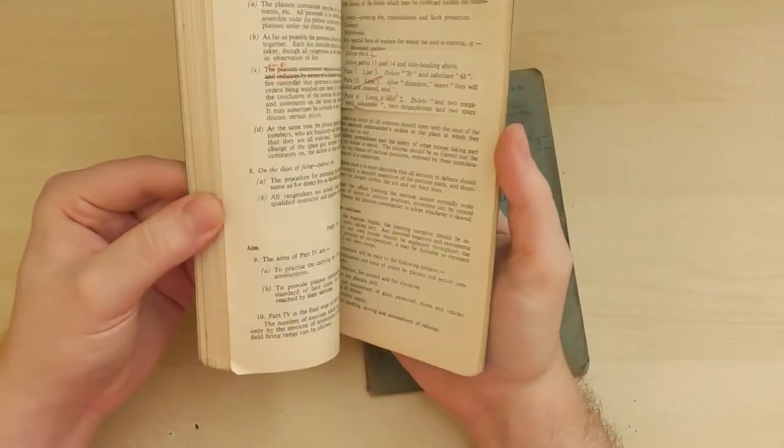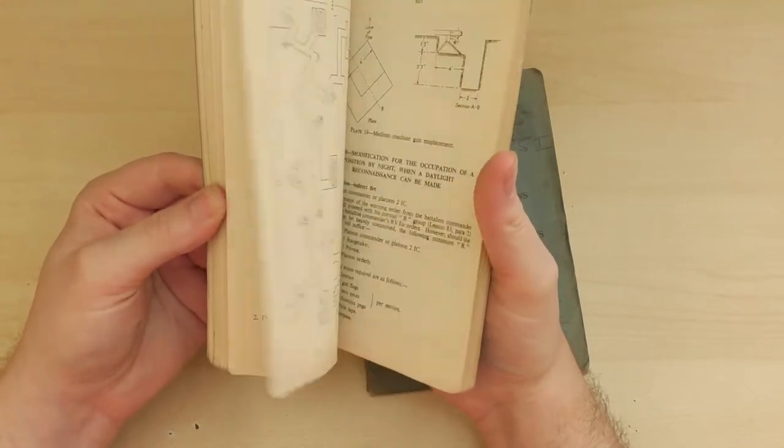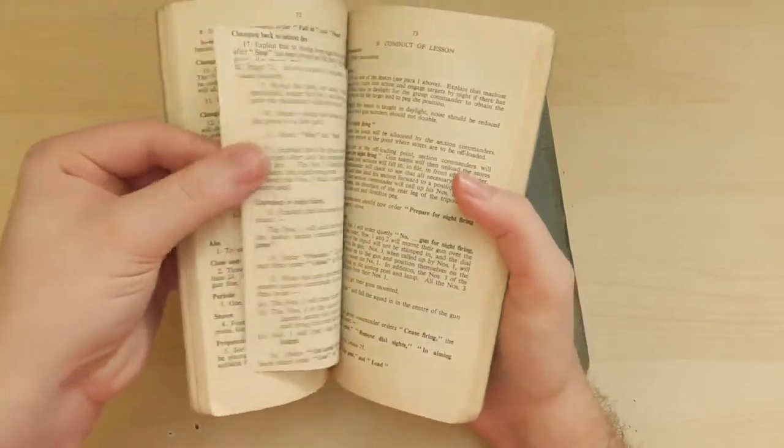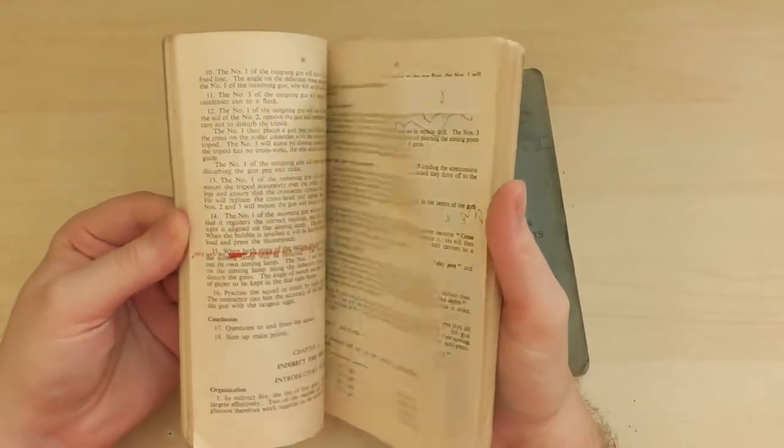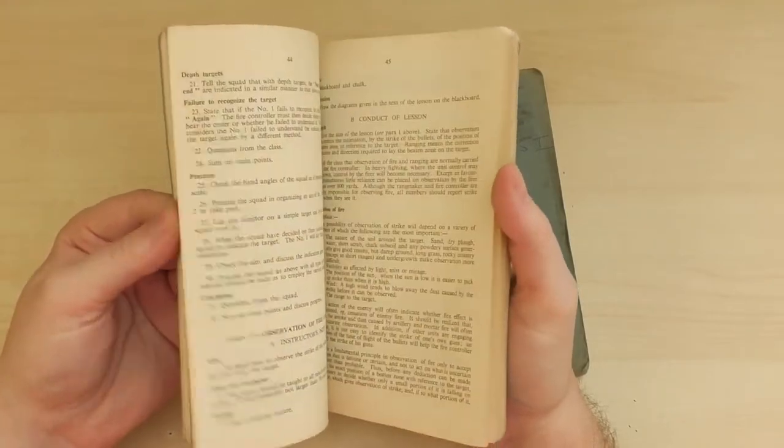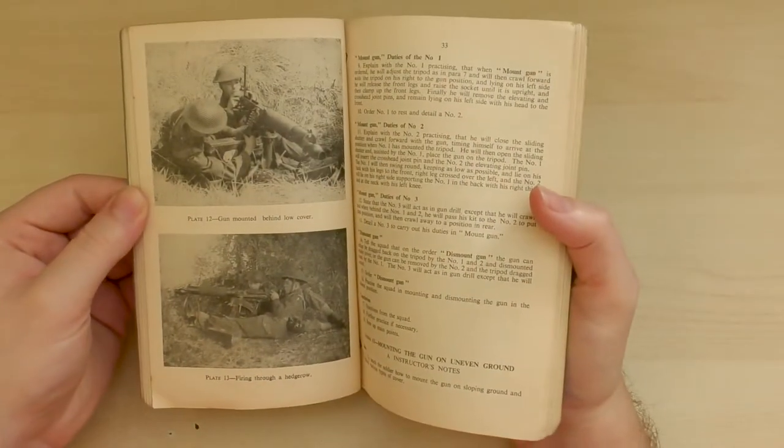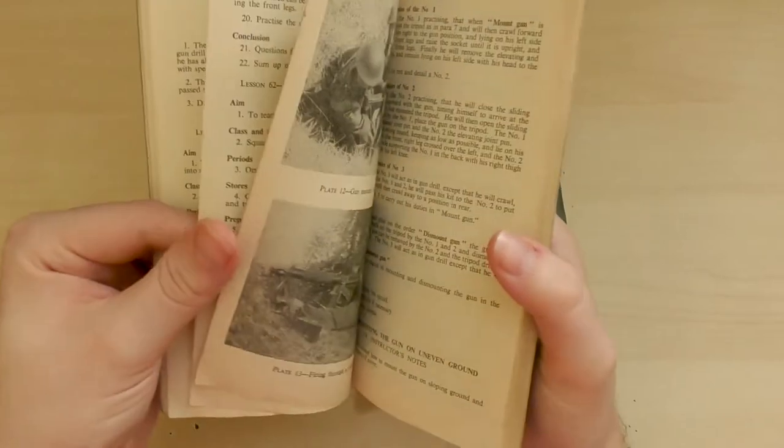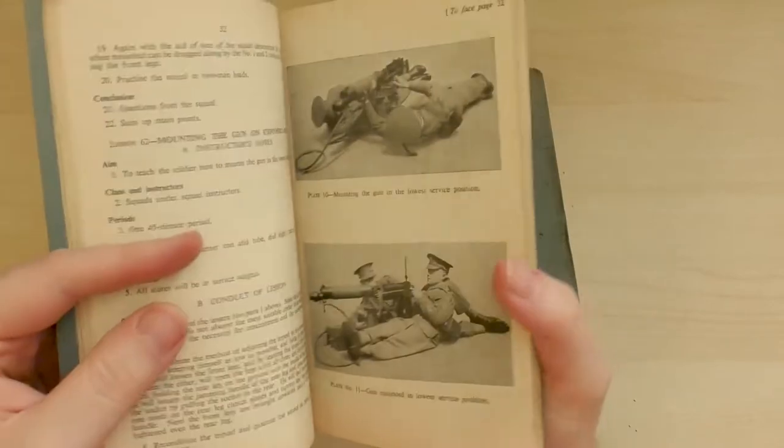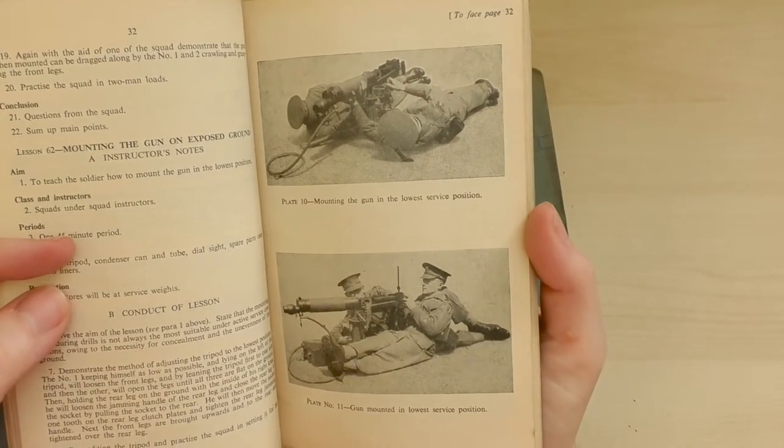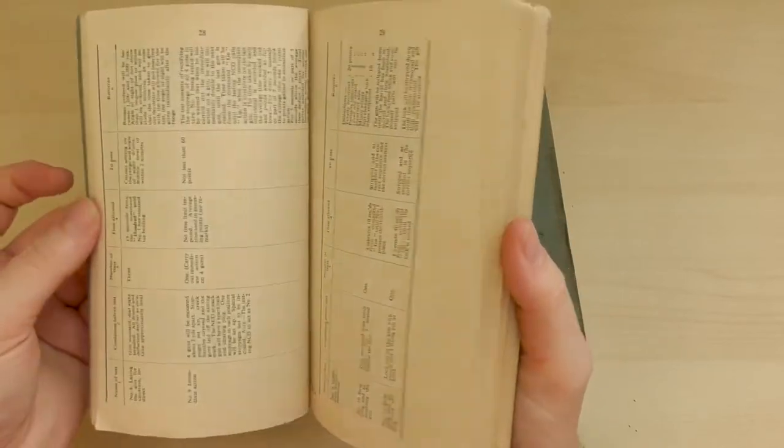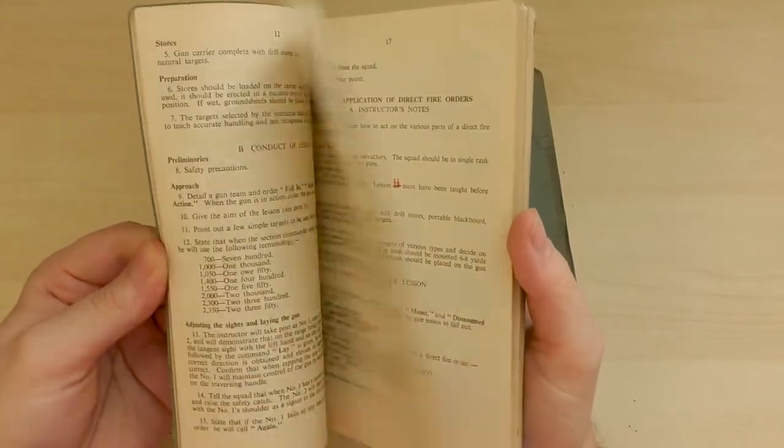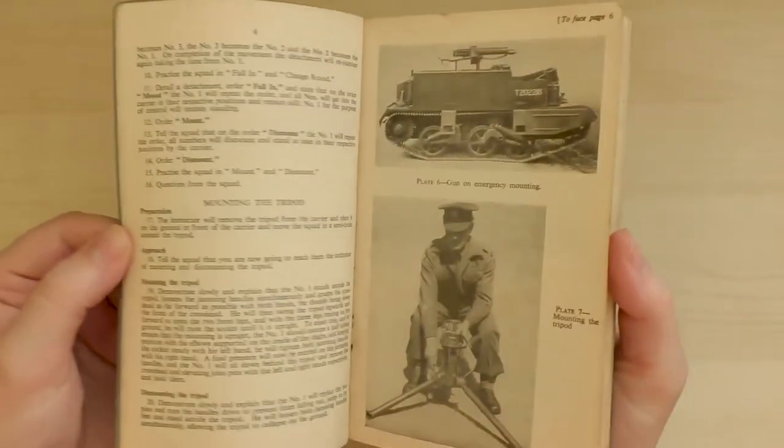This one's drills and training. More corrections. I'm sure Rich has got a video on these already. But we'll take a look at them again in the future. There's some good images there. Gun mounted below low cover. Firing through a hedgerow. Mounting the gun in the lowest service position. Sort of a classic position there with the number two supporting the number one's back. Nice to see it in a carrier.